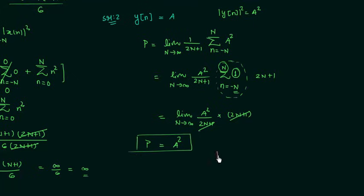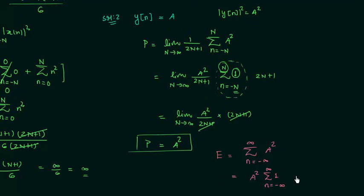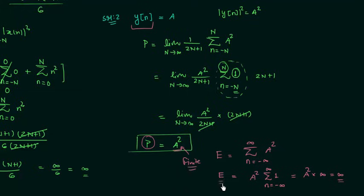Now we will calculate the total energy E. The total energy E equals the summation from n = -∞ to +∞ of A², which we can write as A² times the summation from n = -∞ to +∞ of 1. When you add 1 from -∞ to ∞, you get infinity. So we have A² multiplied by infinity, which equals infinity. Therefore, the total energy is infinite for signal y[n], and the average power equals A², which is a finite value. Since the average power is finite and the total energy is infinite, this satisfies the condition of a power signal. So signal y[n] is a power signal.